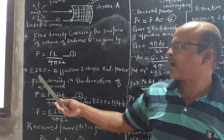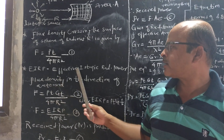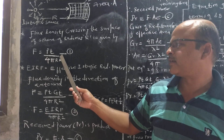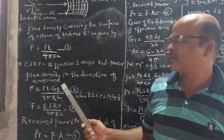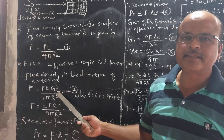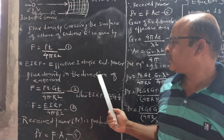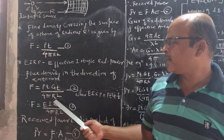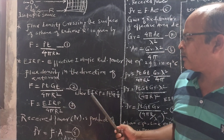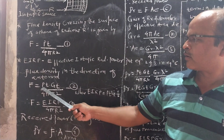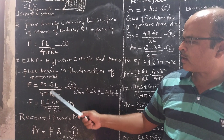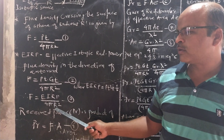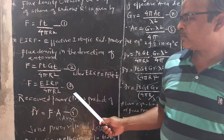Next, in terms of EIRP — Effective Isotropic Radiated Power — we have to rewrite this equation. If we consider the gain of the transmitting antenna as Gt, then we can write flux density in the direction of the antenna as: EF = PT·GT / (4πR²). Since EIRP is the product of PT and GT, we can define this equation as EF = EIRP / (4πR²). This is equation number 3.